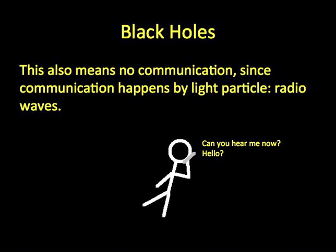Since light can't get out, there's no communication. Radio waves, for example, are a main mode of distant communication, but radio waves are forms of light. And since not even light can get out, those radio waves would die by the time they reached the edge of the black hole.